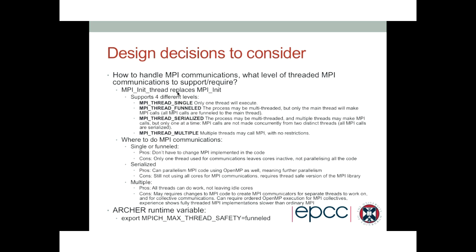If you're going to run a hybrid code on Archer, you have to set the environment variable MPICH_MAX_THREAD_SAFETY to tell the MPI library what kind of threading you want. Otherwise, when you call MPI_Init_thread and ask for funneled, it might say it's not supporting that and cancel your program. This is documented in the Archer user guide.